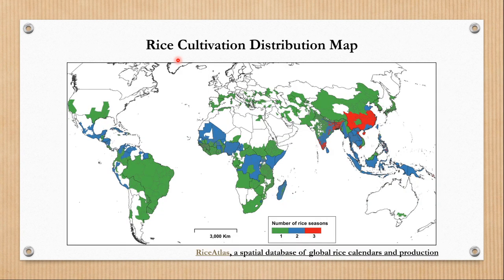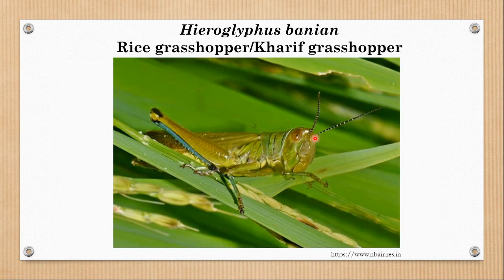Let's look at this distribution map of rice cultivation. You can see that rice is cultivated in many parts of the world and India is one of the major producers of rice. Many people in India, particularly the people in the east and south, depend on rice as their main food. So let's first talk about Hieroglyphus banian, which is commonly known as rice grasshopper or kharif grasshopper.